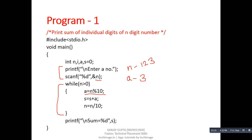The second step is s equals s plus a. Initially s is 0 and a is 3, so the value of s becomes 3. The last step is n equals n divided by 10. The current value of n is 123, and dividing by 10 gives the quotient, so the new value of n becomes 12.